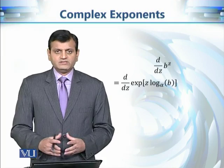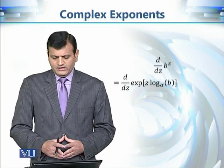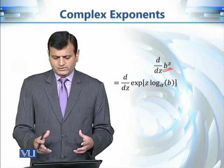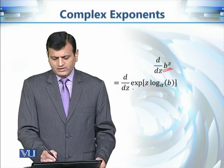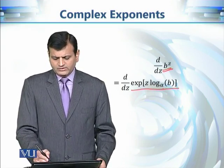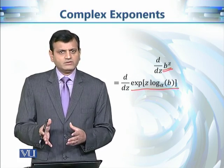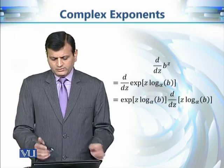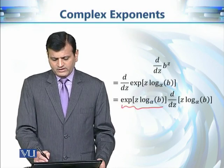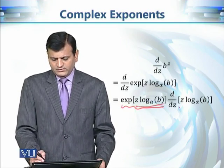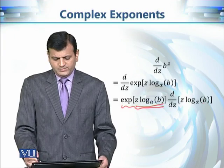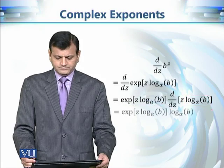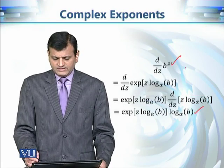If b does not lie on the branch cut, we can define its derivative. We focus on one branch: b raised to the power z denotes one branch of this multi-valued function. By definition, this equals e raised to the power z times log_α of b, where α indicates the chosen branch cut. Using the derivative of the exponential function, this equals e to the power (z log_α b) times the derivative of z log_α b.